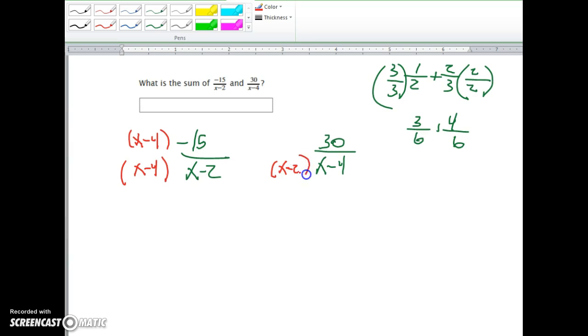And this side we'll multiply by (x-2). So now I'm reformatting these two expressions so they both have (x-2) times (x-4) at the bottom. I have to multiply the top here because the only way I don't change this meaning is to multiply by 1, and (x-2)/(x-2) is 1.